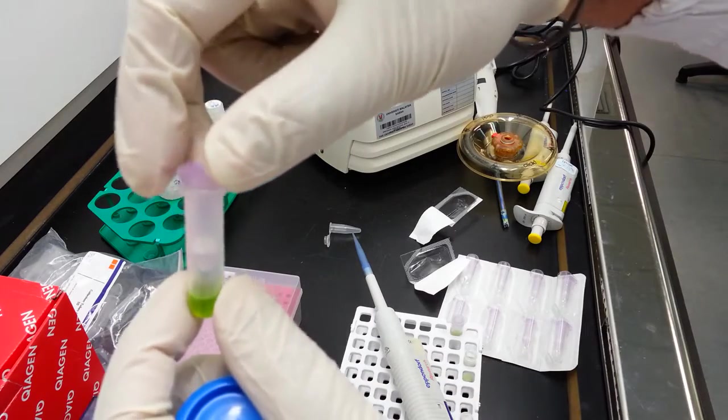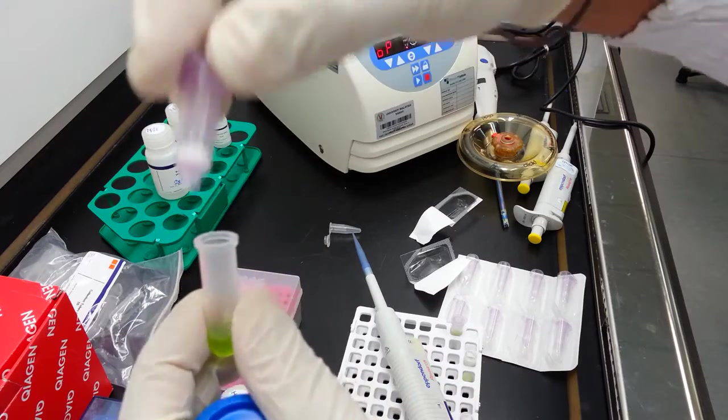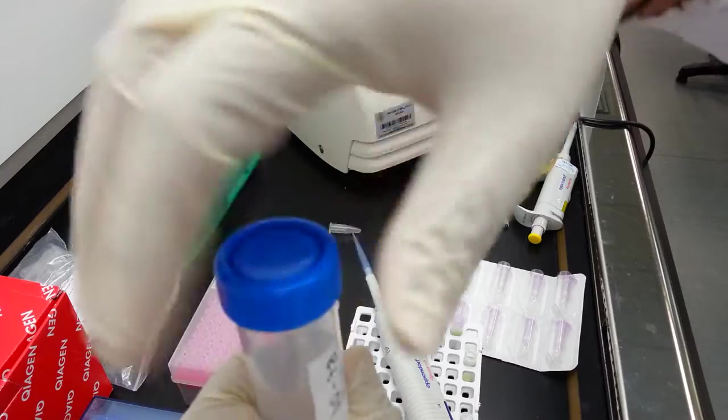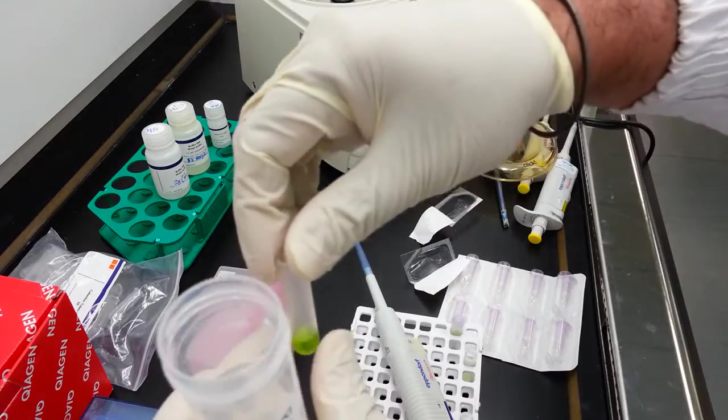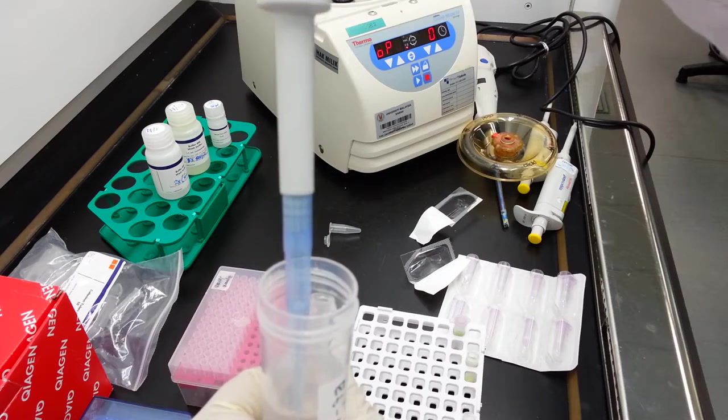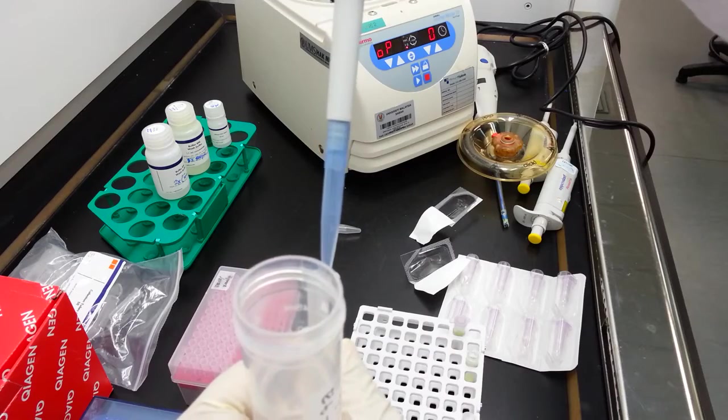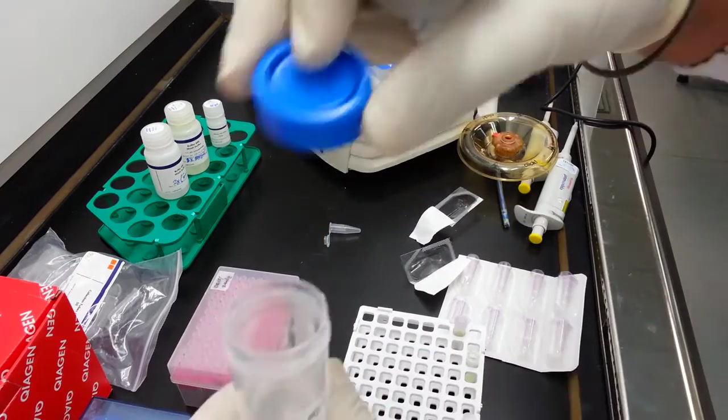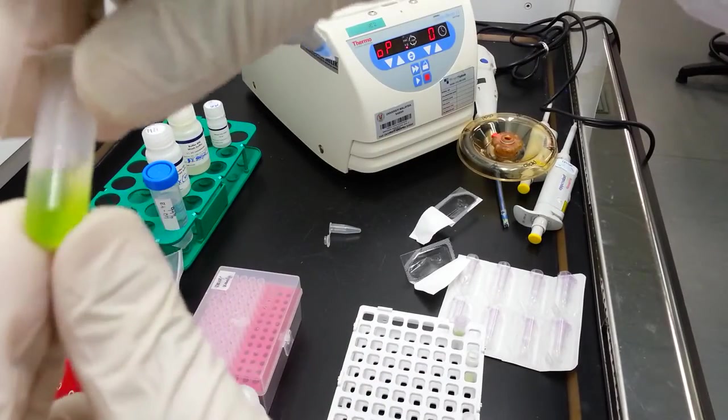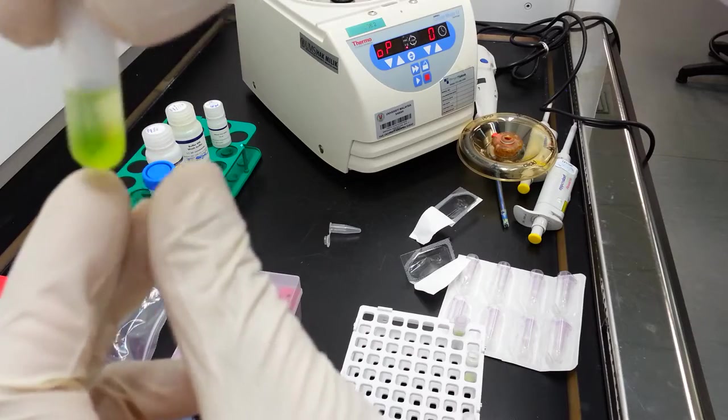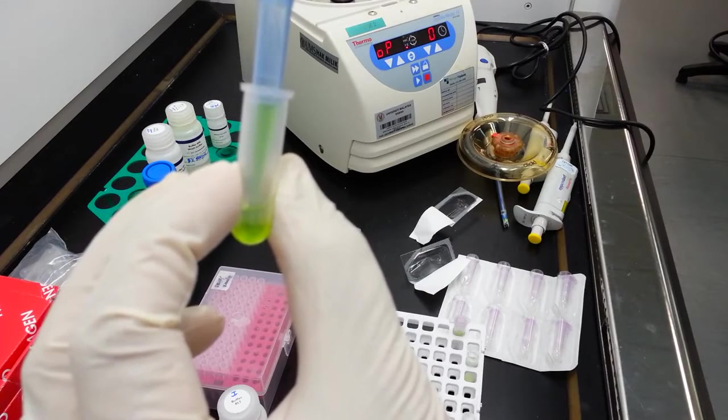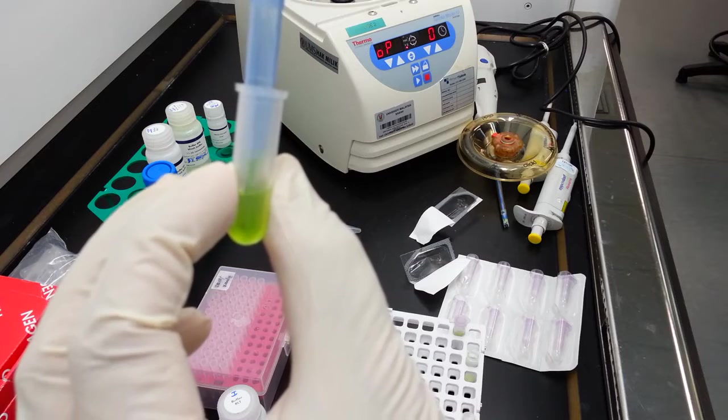After you spin down, we can now discard the upper column and add an equal volume of 100% absolute ethanol to the lower filtrate. You may see some formation of precipitate but all of this needs to be transferred into the next column, so briefly pipette this mixture.